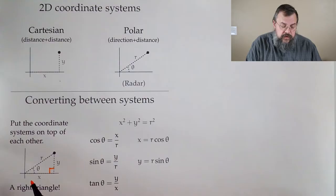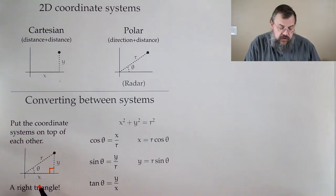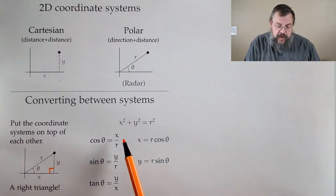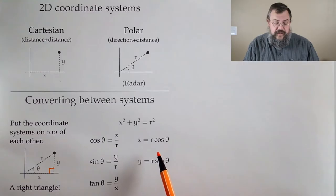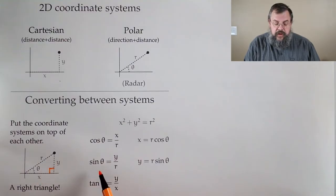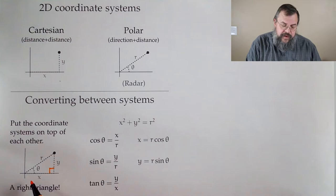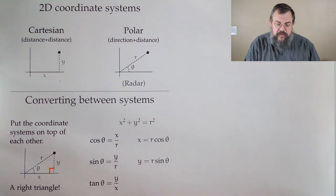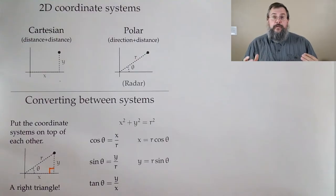We can also look at ratios involving theta. Cosine of theta is adjacent over hypotenuse, so x over r — meaning x equals r cosine theta. Sine is opposite over hypotenuse, so sine of theta equals y over r, meaning y equals r sine theta. And we'll throw one more in: tangent of theta equals y over x. Using these rules, we can convert back and forth between the two coordinate systems.